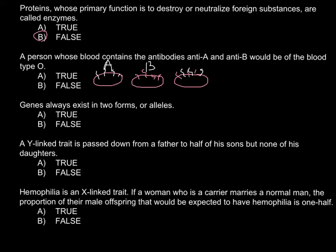We would also have a third group that has both antigen A and antigen B present on the surface of the red blood cell — we call this blood group AB. And the fourth blood group would be O, when we don't have any antigens present. So we call this group O.